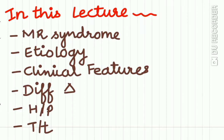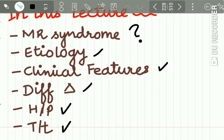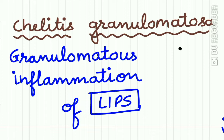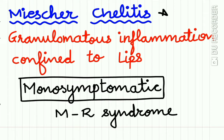Let's begin today's lecture on Melkersson-Rosenthal syndrome. We will study the etiology, clinical features, differential diagnosis, histopathology, and treatment. Cheilitis granulomatosa is the granulomatous inflammation of the lips. Mesocheilitis is the granulomatous inflammation confined to the lips and is also known as the monosymptomatic form of Melkersson-Rosenthal syndrome.